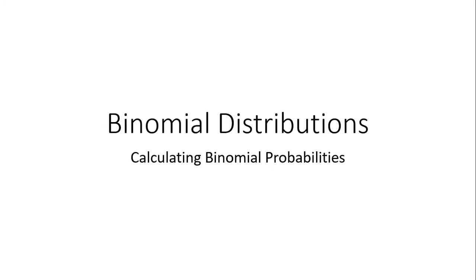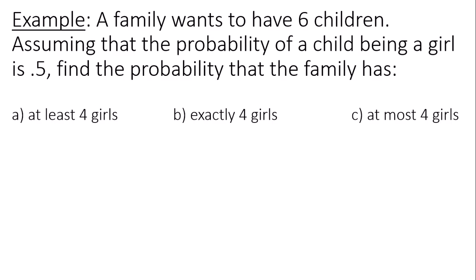This is a video on how to calculate binomial probabilities. A family wants to have six children. Assuming that the probability of a child being a girl is 0.5,